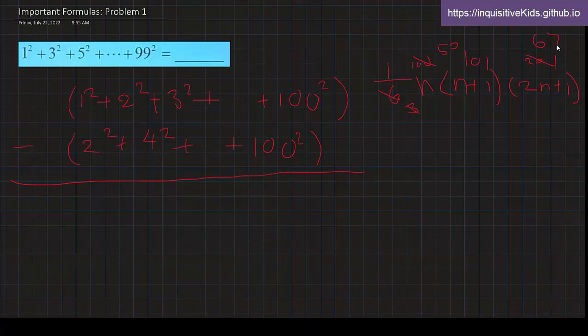Alright, and after we have this, right, we have 50 times 101 times 67. We can, it's equal to 50 times 67. And that's equal to, we can break it up. So for the ones place, we get 0, 5, 3, and 35. 35,350.